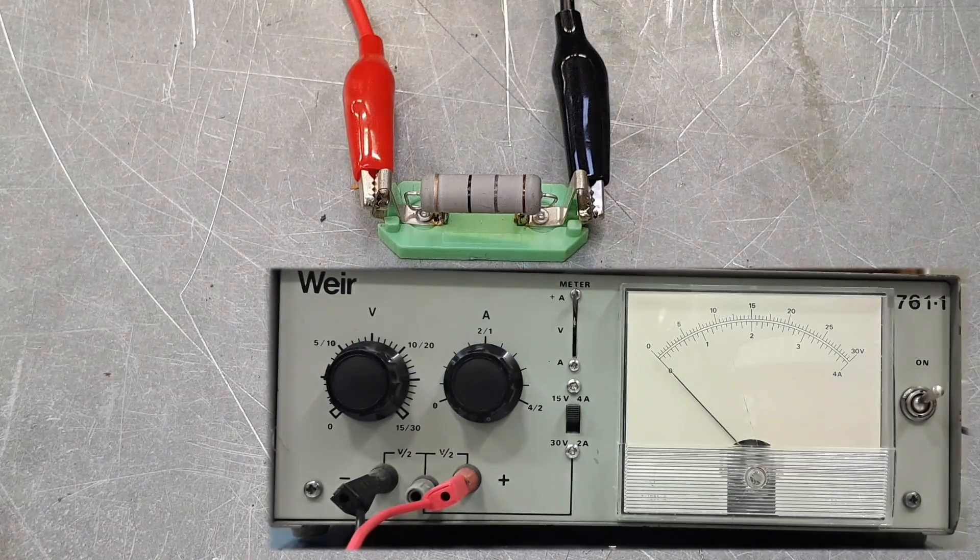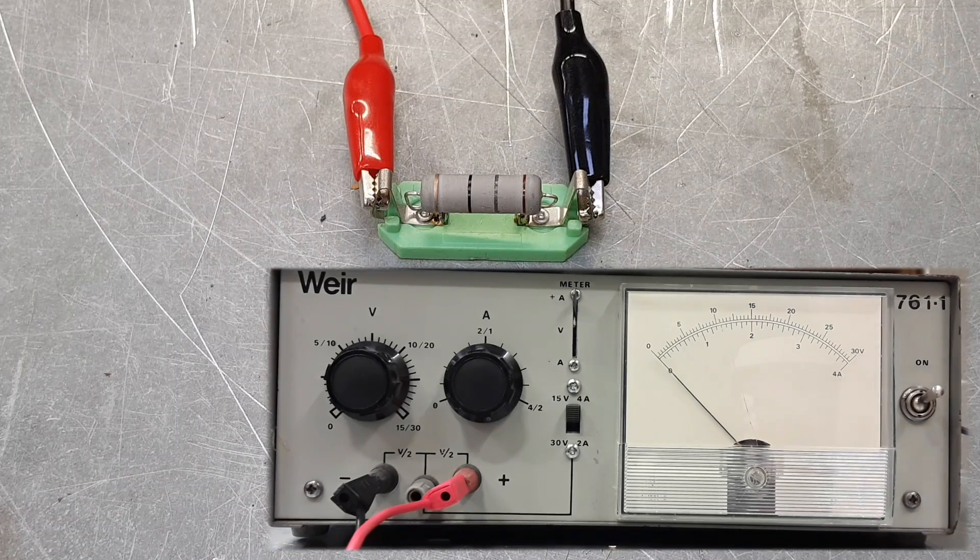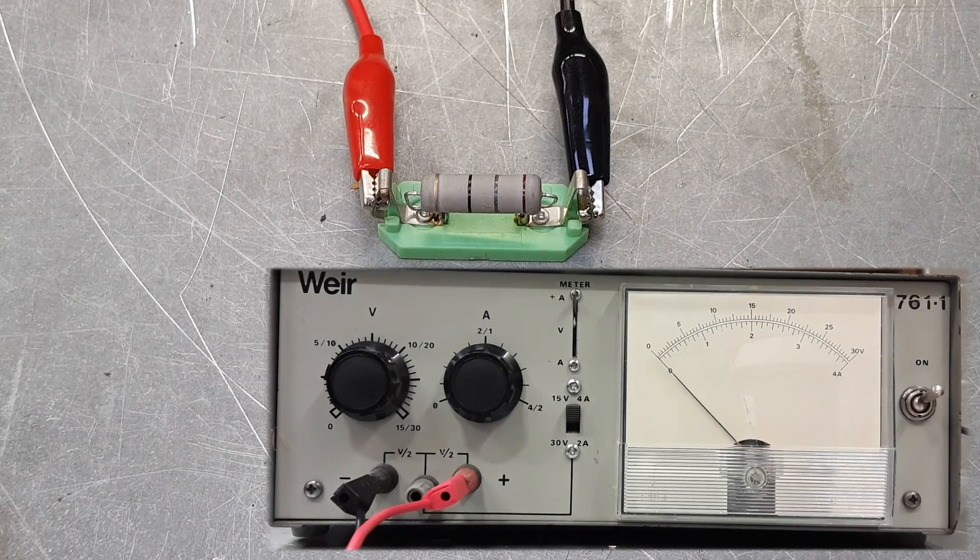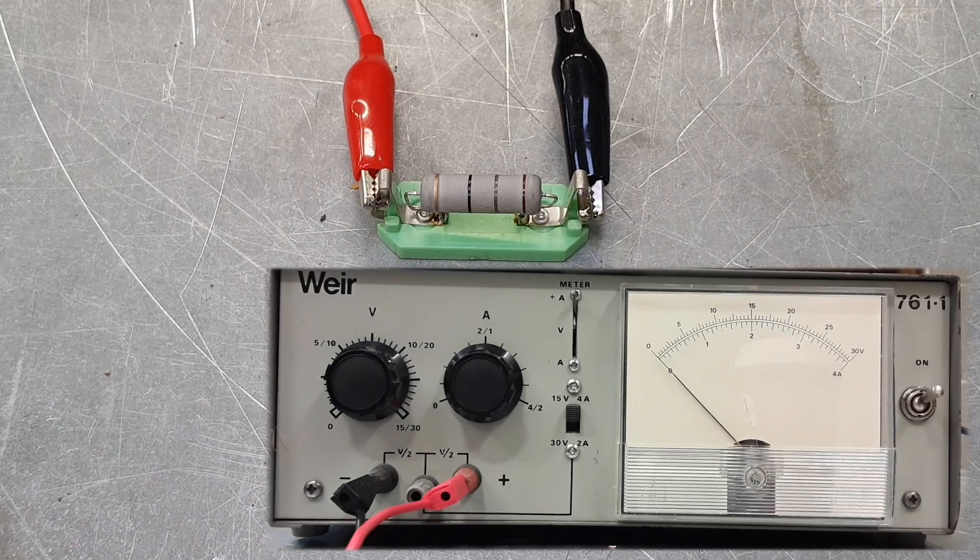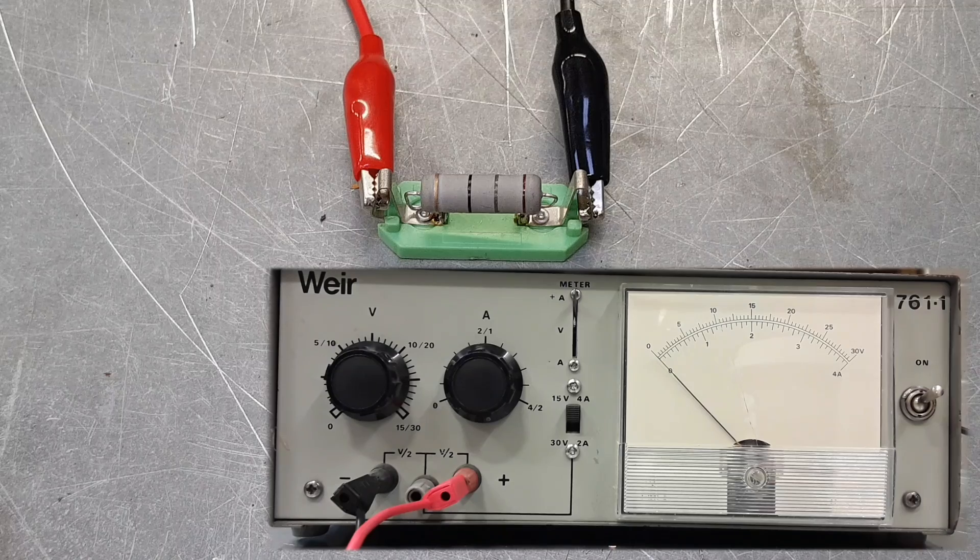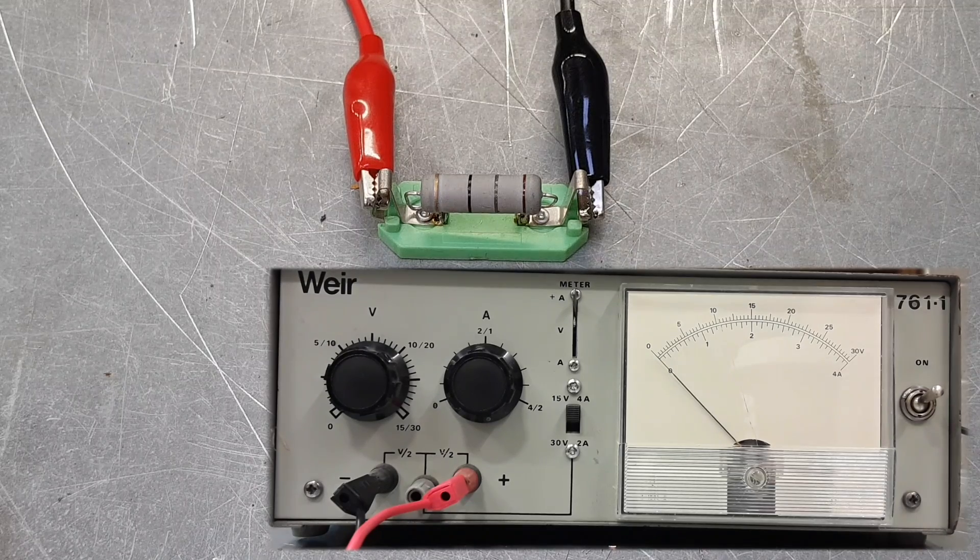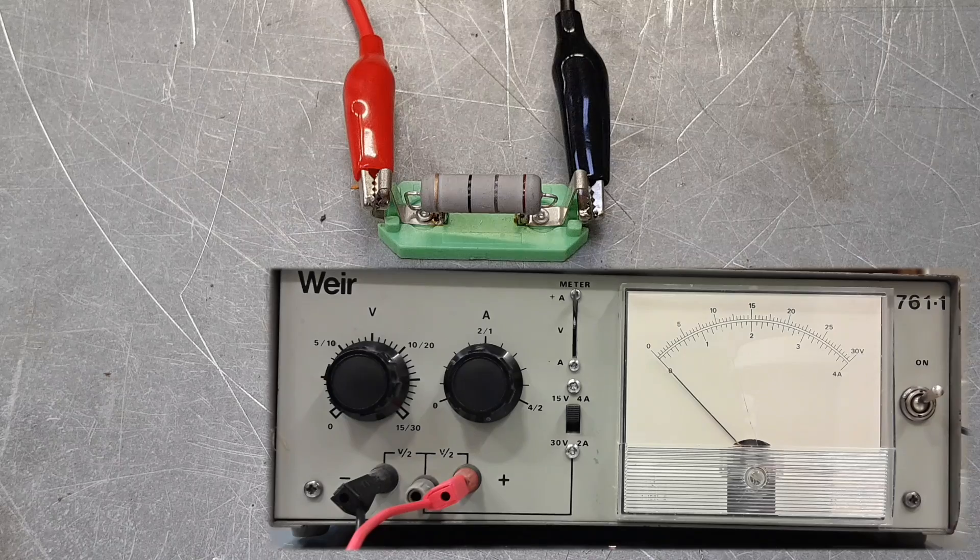Now as we start to pass current through this load what's going to start happening to our resistor there John? It's going to start heating up. Absolutely due to the thermal effect of electricity. We should see a reaction hopefully. As we turn it up it's going to get hotter and hotter until something actually breaks. Absolutely, didn't want to invite John to Tresham College without setting fire to something.